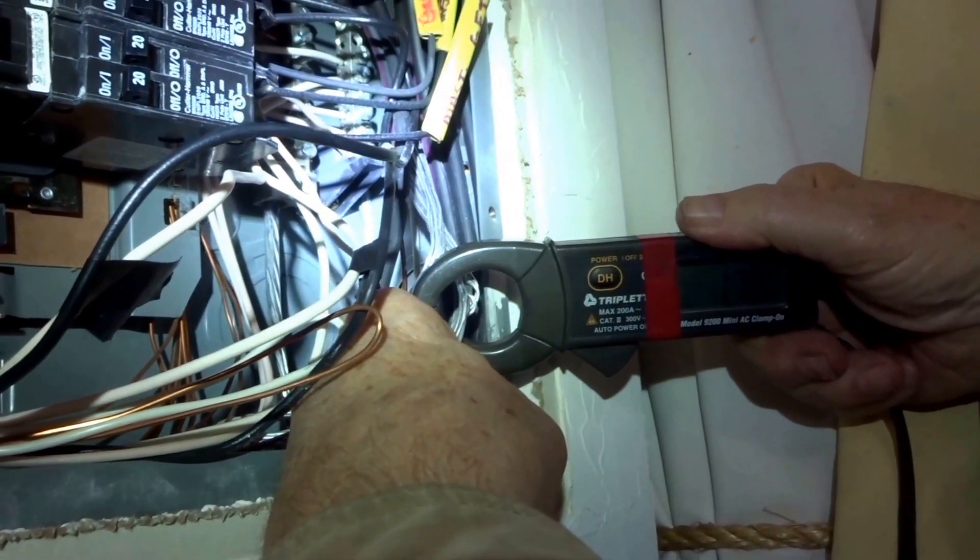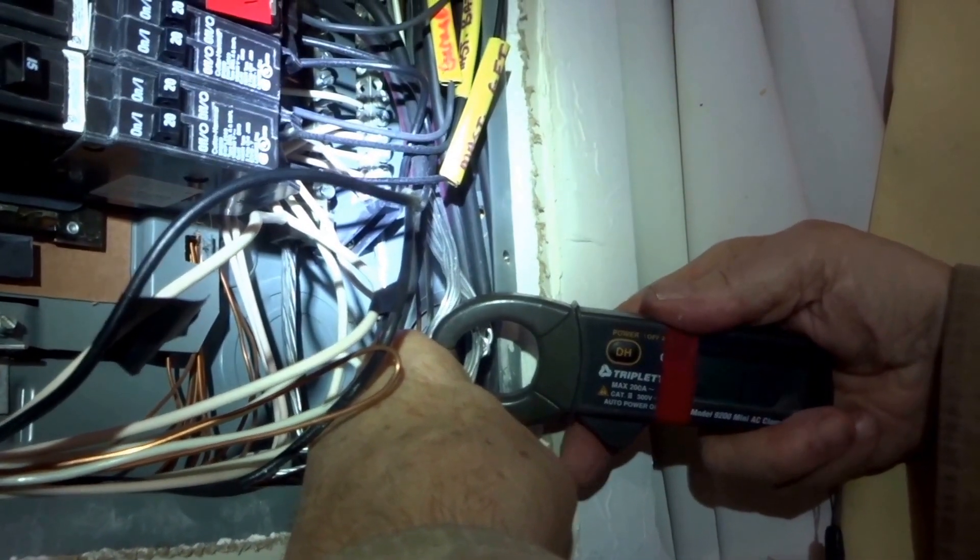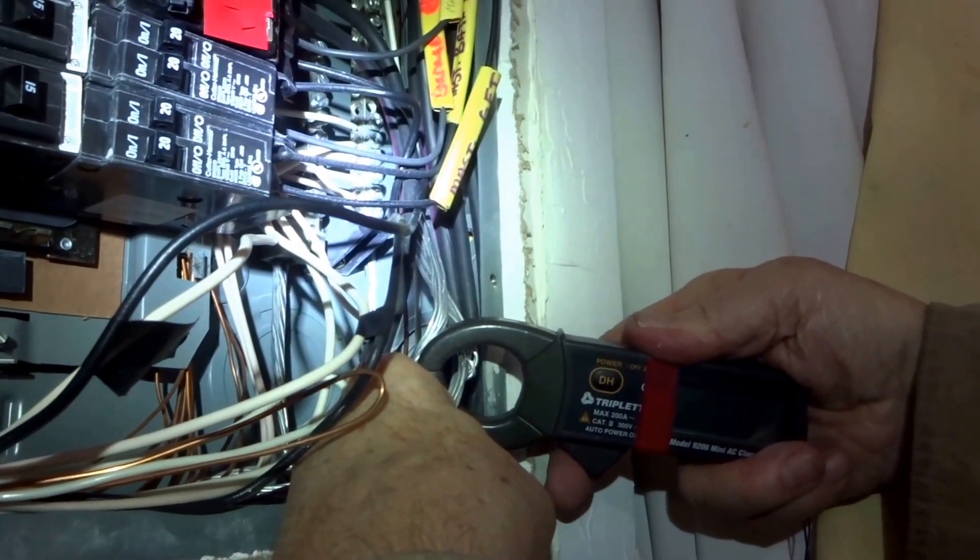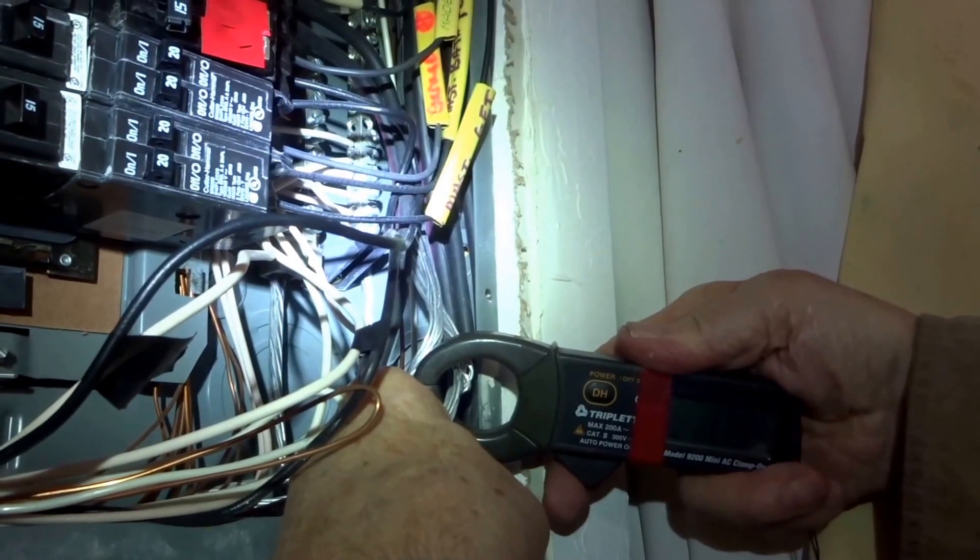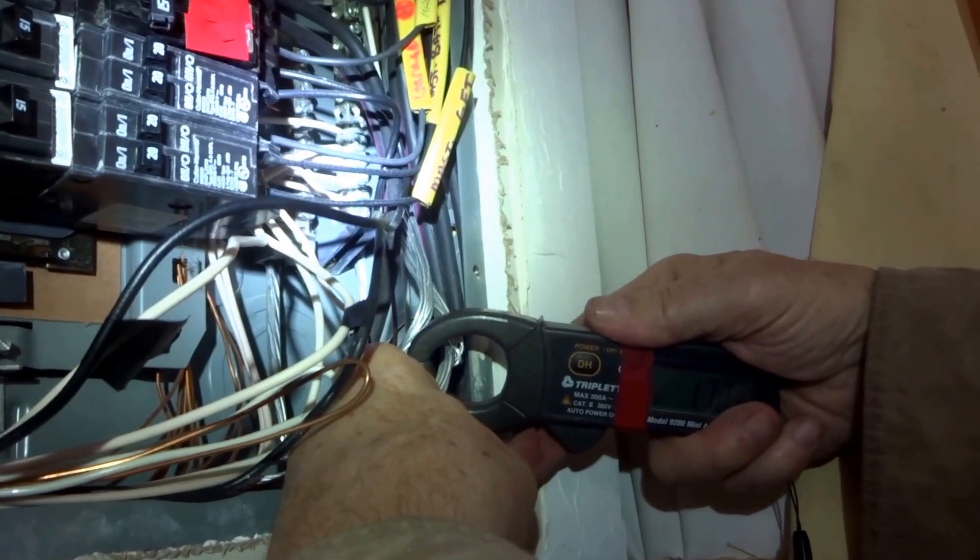So the electricity is supposed to go back on the neutral return wire. We previously found a partially open utility neutral. And so is this the electricity just looking for any and all ways to get back and complete its circuit?